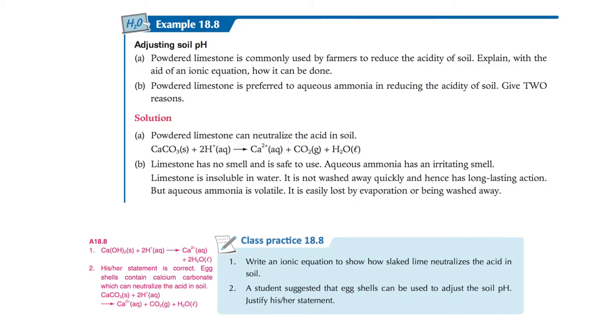Example: Powdered limestone is commonly used by farmers to reduce the acidity of soil. Explain with ionic equations how it can be done. We have calcium carbonate and acid. Remember, we don't know what kind of acid it is, so use H+ to write the equation. The mechanism behind it is that limestone neutralizes the acid in the soil. Strictly speaking, with calcium carbonate, we don't use the word neutralize - it's better to say calcium carbonate reacts with the acid, because it's not neutralization at all.